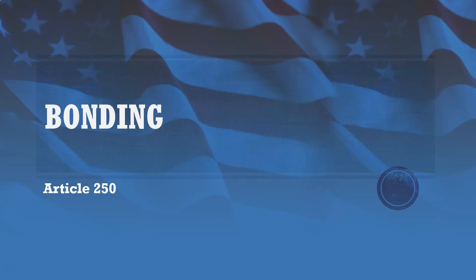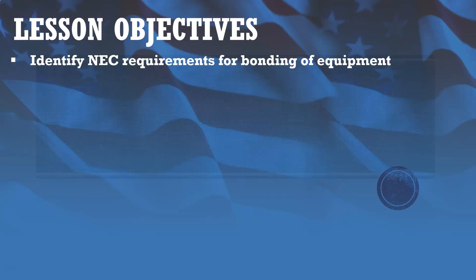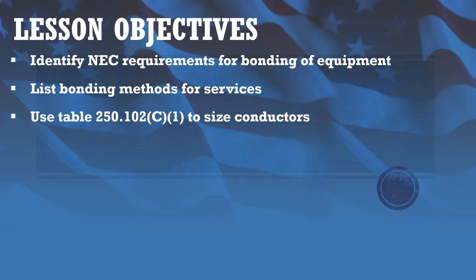This is going to be our fifth lecture in Module 2. In this lecture, we're going to be covering bonding as it applies to Article 250. Our objectives: we're going to identify NEC requirements for bonding of equipment, list bonding methods for services, and use Table 250.102 C1 to size conductors.